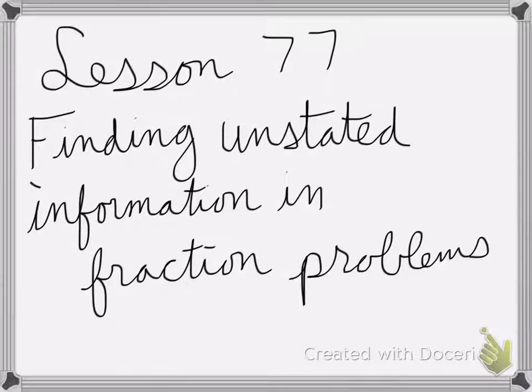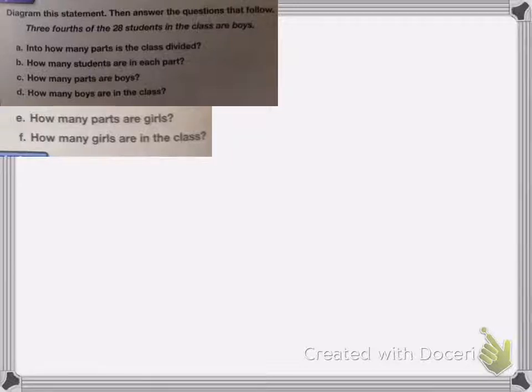Alright, so lesson 77 is on finding unstated information in fraction problems. So here we have, diagram this statement and then answer the questions. So three-fourths of the 28 students in the class are boys.